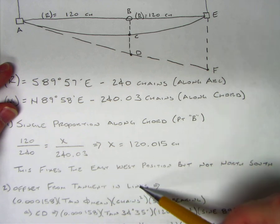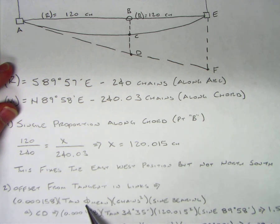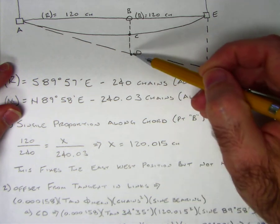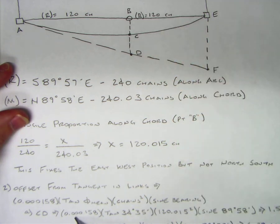The offset from the tangent in links: the equation is 0.000158 times the tangent of the mean latitude times the distance in chains squared times the sine of the bearing. For CD, 0.000158 times tangent of 34 degrees 35 minutes times 120.015 squared times sine of 89.58, that gives 1.57 links.